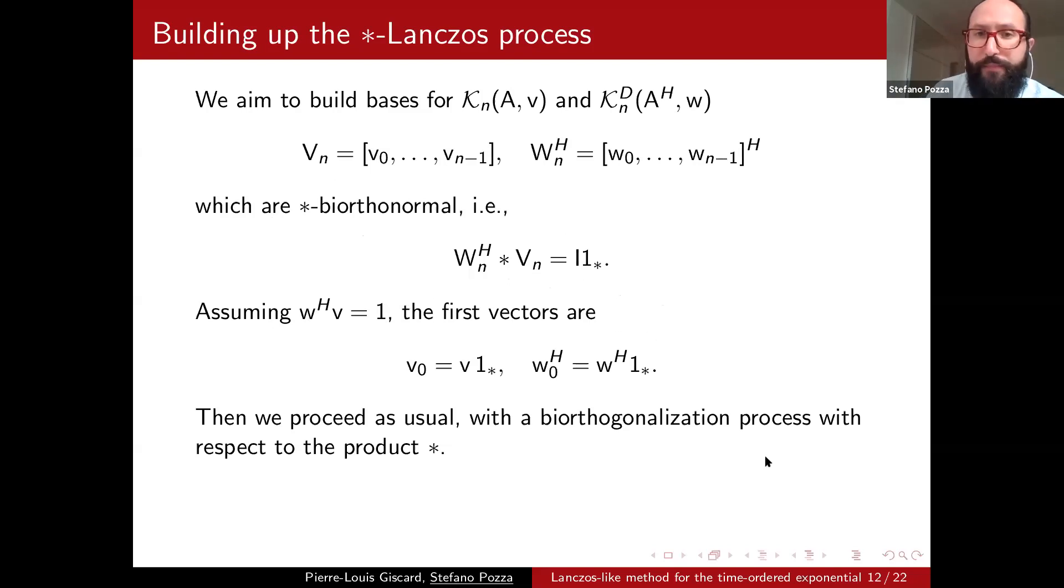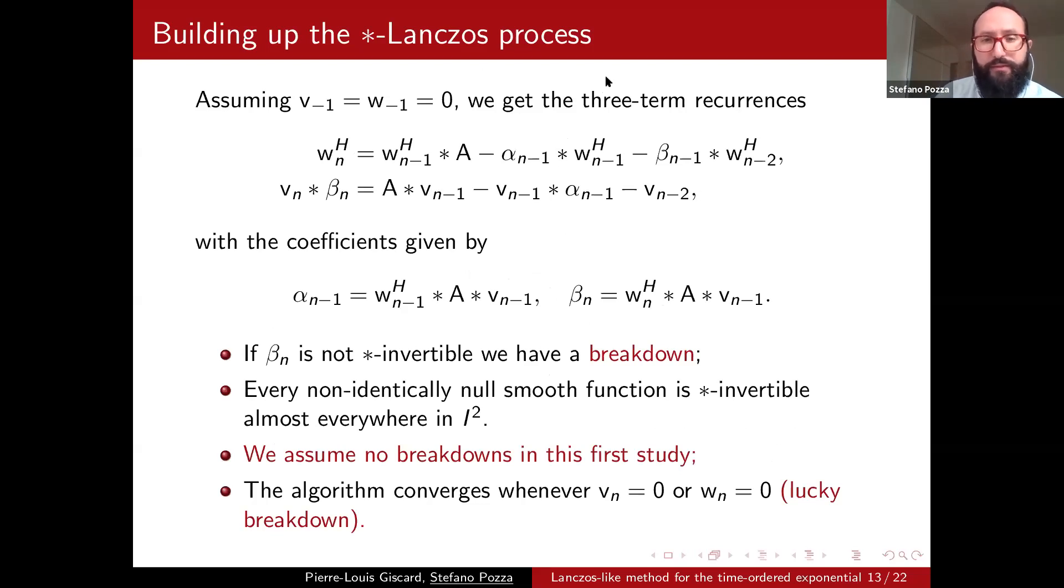And here again, the identity is the identity matrix times the Dirac delta function. And you can do that, and as I said, we don't have time to discuss how to build that. But if you start doing the star orthogonalization process in the same way as you would do with the non-Hermitian Lanczos algorithm, you end up with a couple of three-term recurrences. So you see, you can build the new w vector using the two previous one and two coefficients, alpha and beta, and the same for vn with the beta n and alpha n minus one coefficient. Here we have vn star beta n. It means that to compute vn we need to divide in the sense we need to multiply by the inverse of beta n, the star inverse of beta n. And here is where much of the difficulties are hidden in this problem.